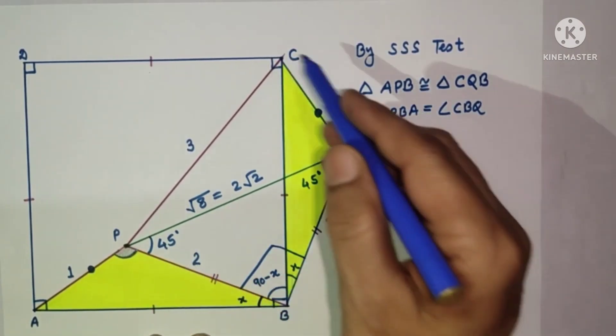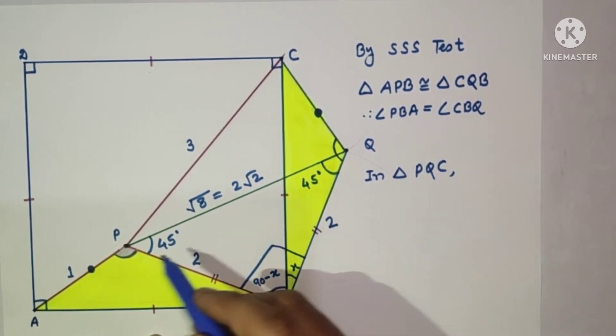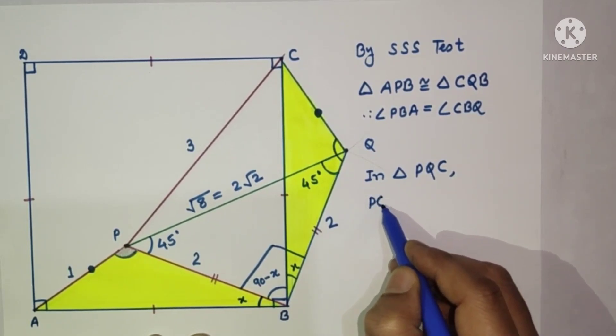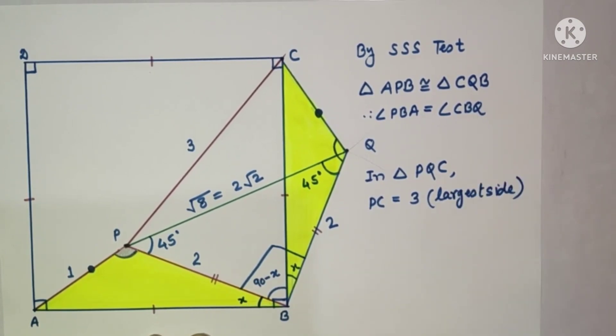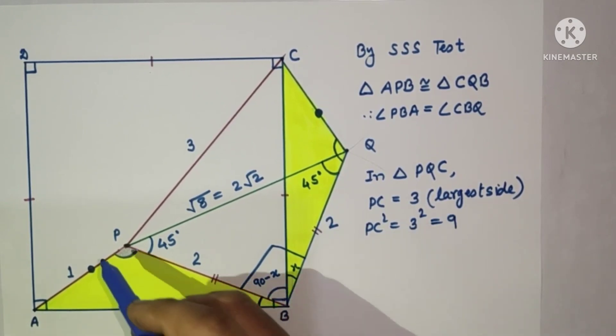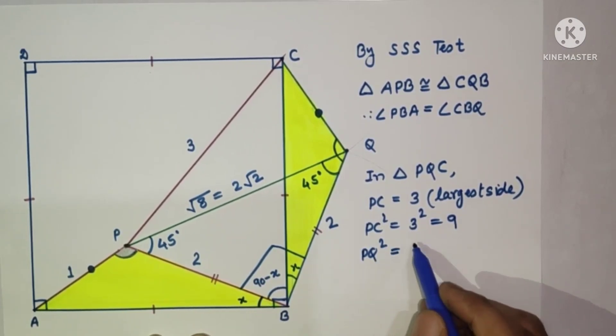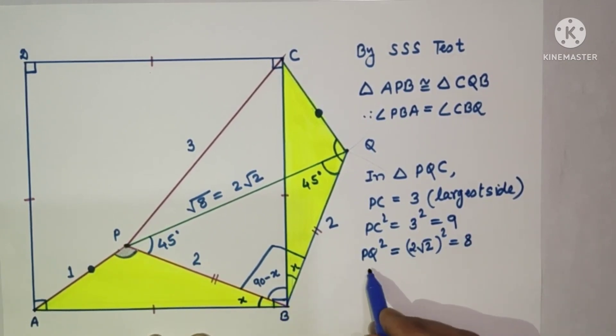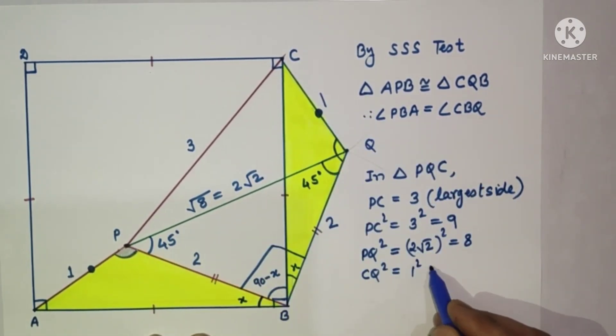In triangle PQC, the largest side is PC. PC is 3, that is the largest side. So PC squared is equal to 3 squared, which is 9. And PQ squared is equal to 2 root 2 squared, which is root 8 squared, means 8. And CQ squared, this is 1 because this is 1.